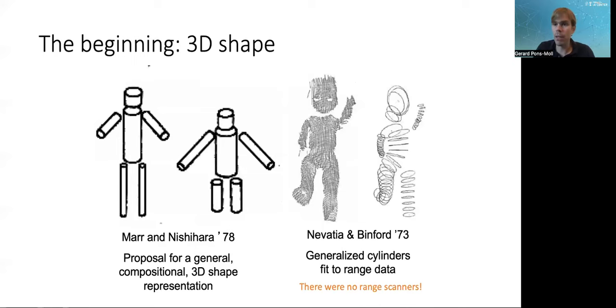There's a long history in modeling of the body. Some works that were really the first ones were the work by Nevatia and Binford and Marr and Nishihara, which basically proposed a collection of primitives based on cylinders. They had a theory on how to adapt these cylinders to different shapes.